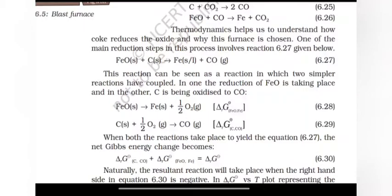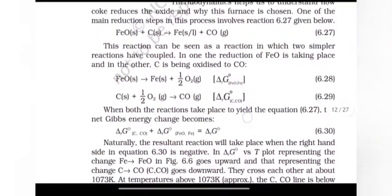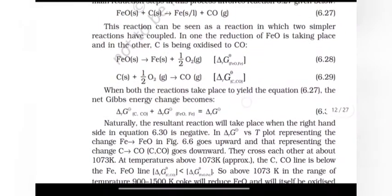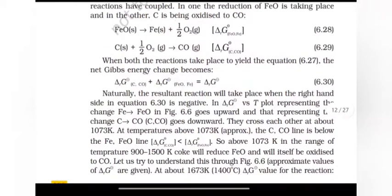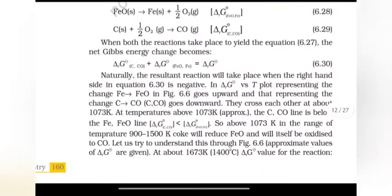This reaction can be seen as the reaction in which two simpler reactions have coupled. In one the reduction of FeO is taking place and in the other, C is being oxidized to CO. FeO gives Fe plus half O2. C plus half O2 gives CO. When both the reaction takes place to yield the equation, the net Gibbs energy change becomes